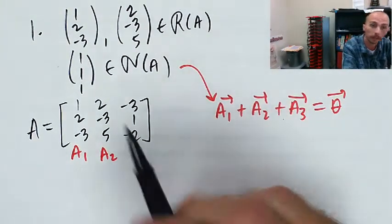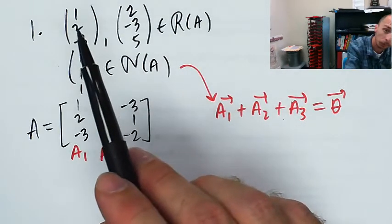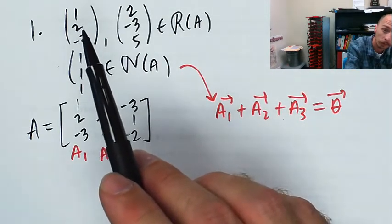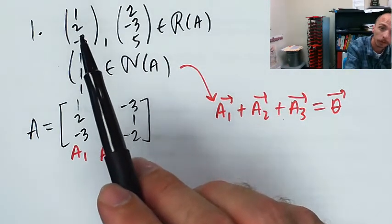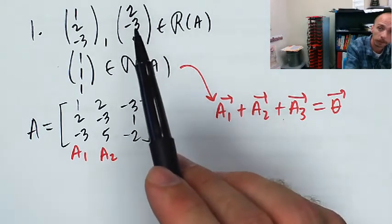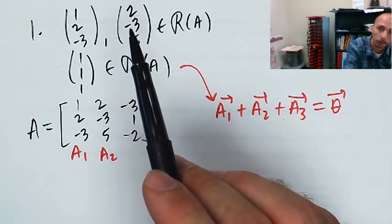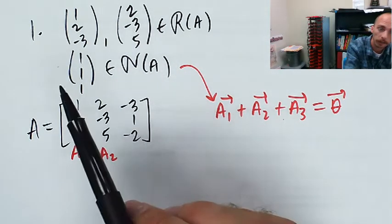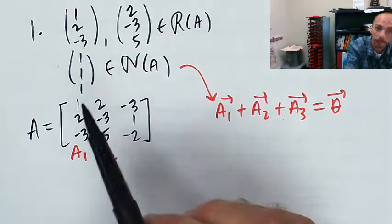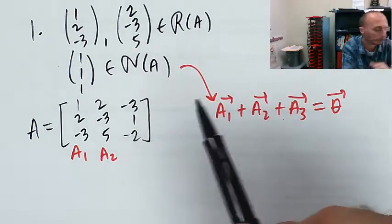We can verify: A times [1,0,0] gives the first column, A times [0,1,0] gives the second column, and A times [1,1,1] gives the zero vector [0,0,0], confirming that [1,1,1] is indeed in the null space.